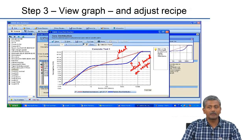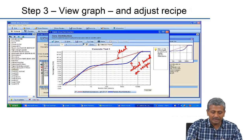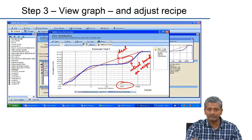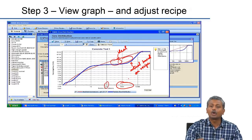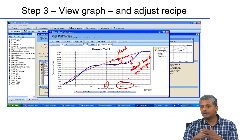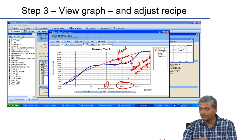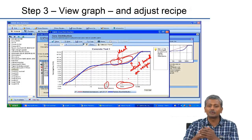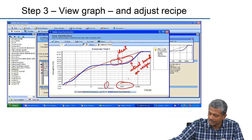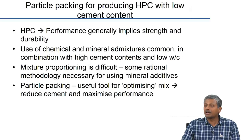When the blue curve is close to the red curve, you go to the lab and make a trial. If it works, all well and good; otherwise, you make adjustments to your mix design. Let us see this done with an example of particle packing for producing high performance concrete with low cement content. Usually those two terms do not go together — when we talk about high performance concrete, we expect very high strength and durability, and generally expect a combination of chemical and mineral admixtures with a low water-to-cement ratio and high cementitious materials content.